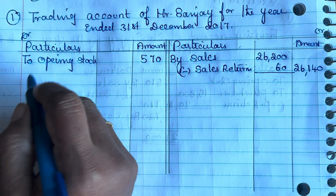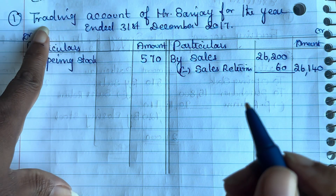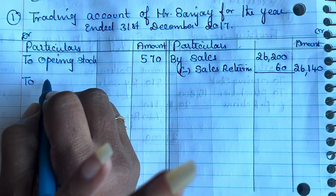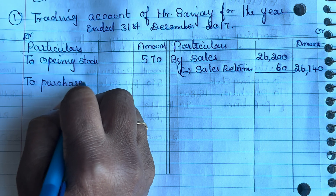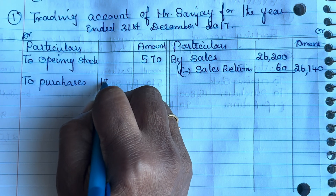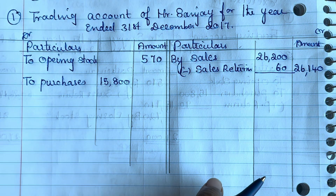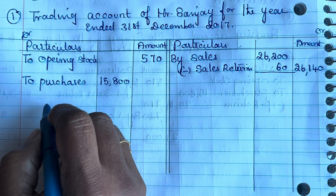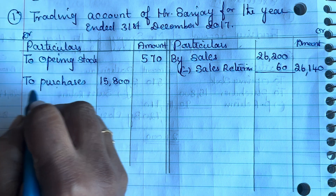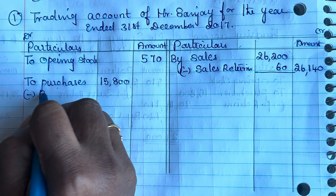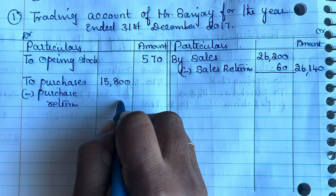Purchases: when you purchase, cash goes out, so it is an expense. You have to write purchases on the debit side of the trading account. Write 15,800 in the inner column. They have also given purchase return — you have to deduct the purchase return amount from purchases. So subtract purchase returns of 90 from purchases.